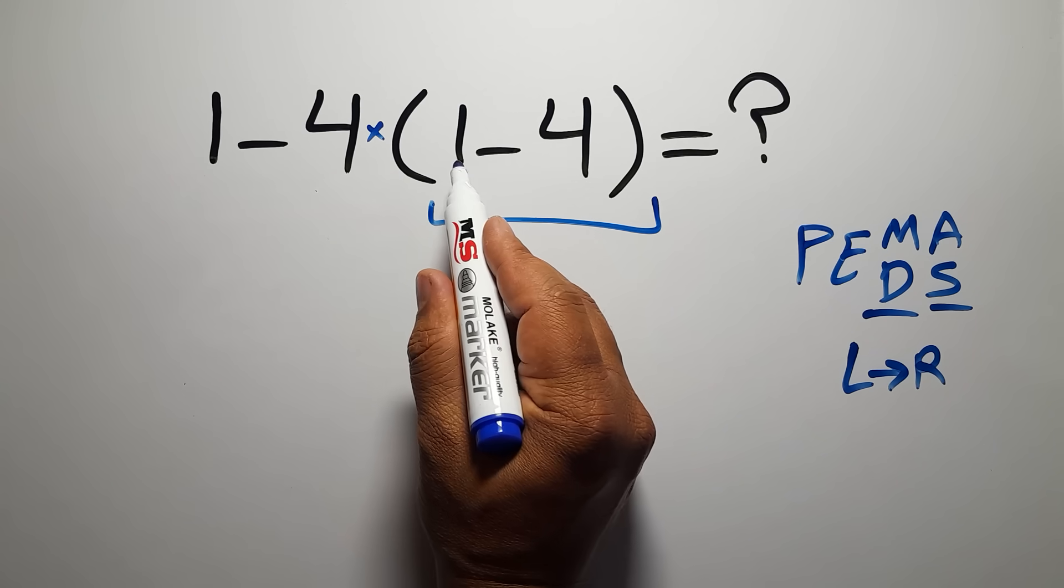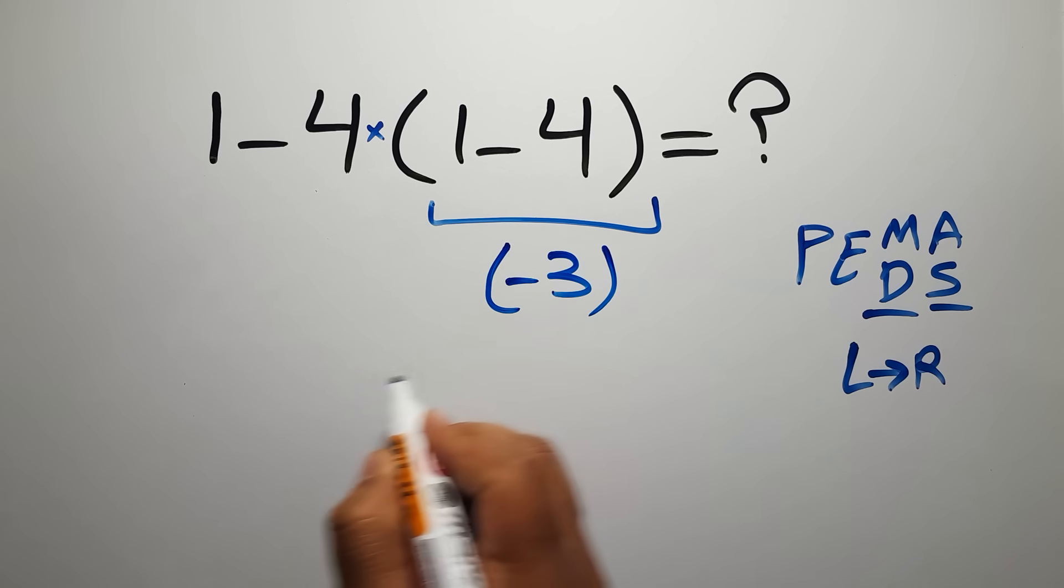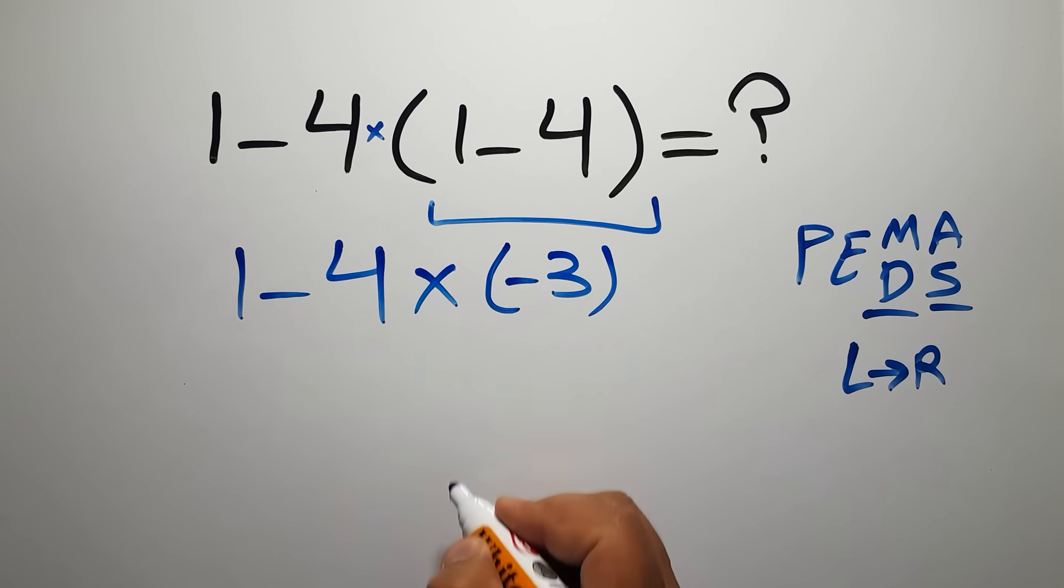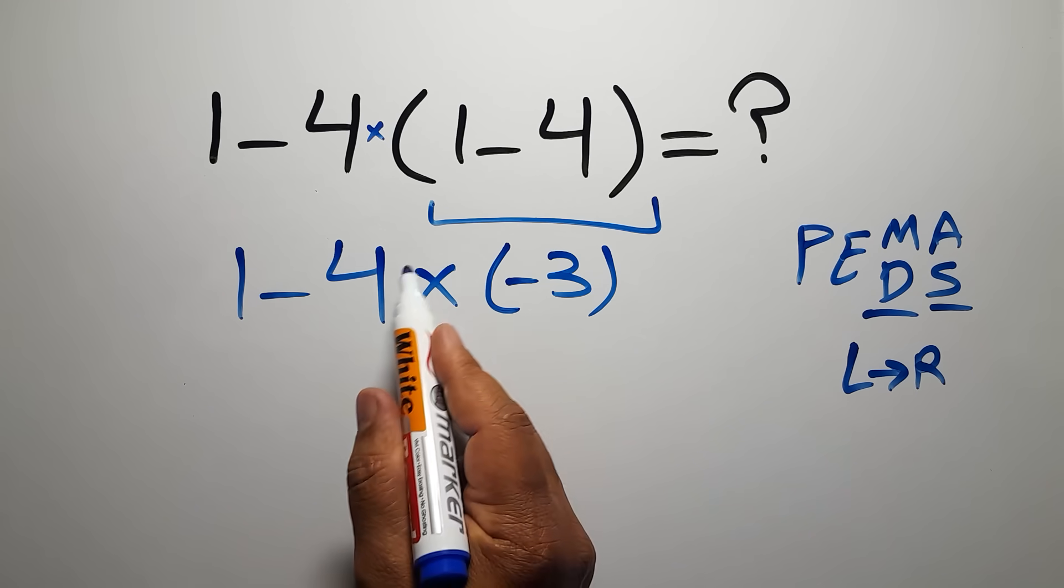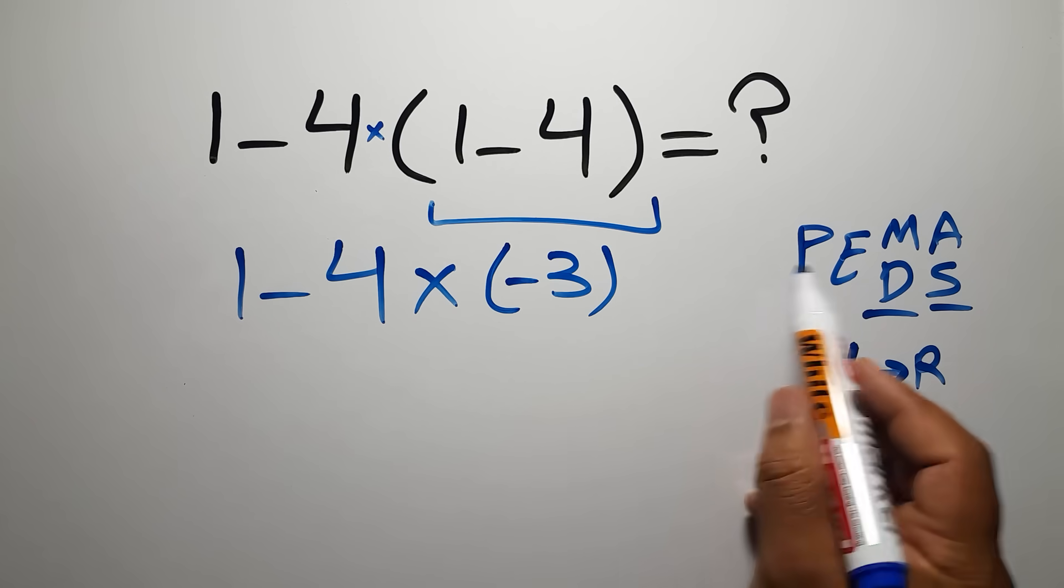Inside this parentheses we have 1 minus 4, which gives us negative 3. So 1 minus 4, then times negative 3. We have 1 subtraction and 1 multiplication. In this step, first we have to do this multiplication because in PEMDAS multiplication comes before subtraction.